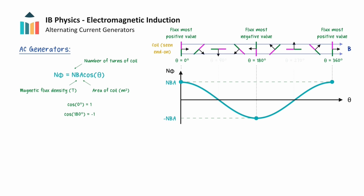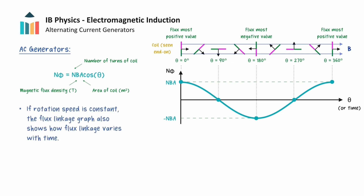Conversely, when the plane of the coil is parallel to the magnetic field — at theta equals 90 degrees and 270 degrees — the cosine value, and consequently the flux linkage, will be 0. In particular, if the rotation speed of the coil is constant, this graph will also show how the flux linkage varies with time.